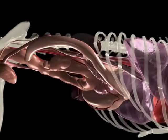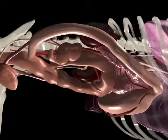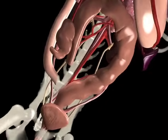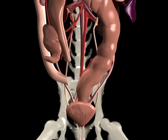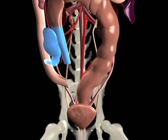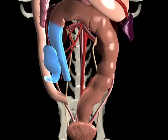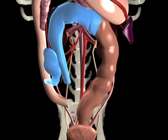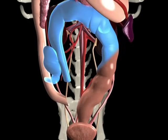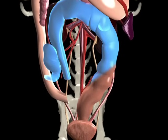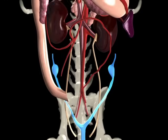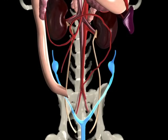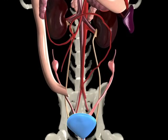Removing the jejunum and viewing the abdomen from its ventral aspect makes it possible to identify the cecum, ascending, transverse, and descending colons, rectum, ovaries, uterus, and urinary bladder.